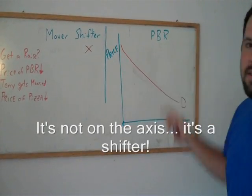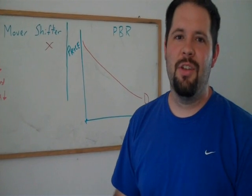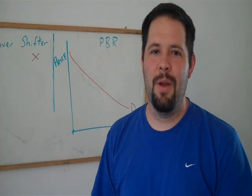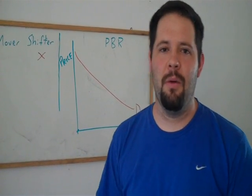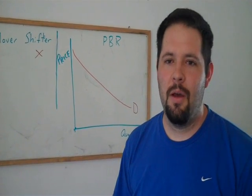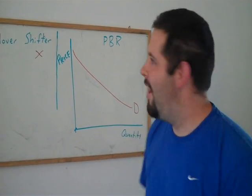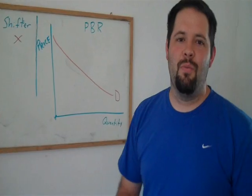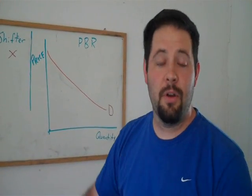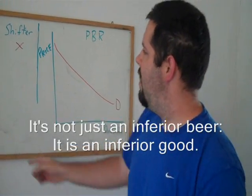Now, as a side note, if we get a raise, we may actually consume less of Pabst Blue Ribbon and more, perhaps, a better quality beer. My favorite is Guinness. Pabst Blue Ribbon, in that case, would be called an inferior good. If your income goes up, you consume less of it.